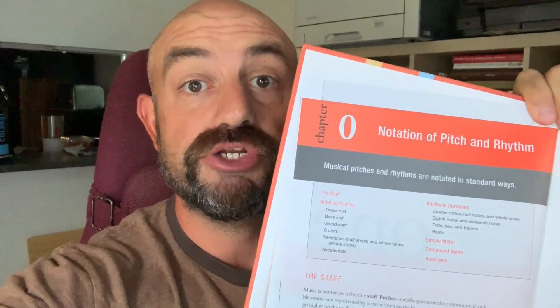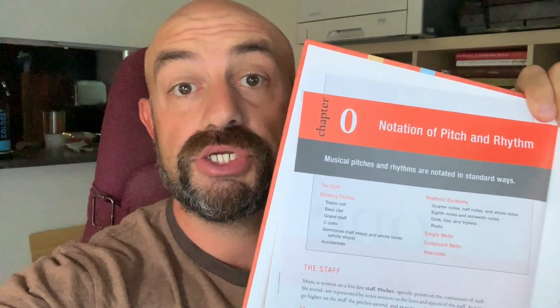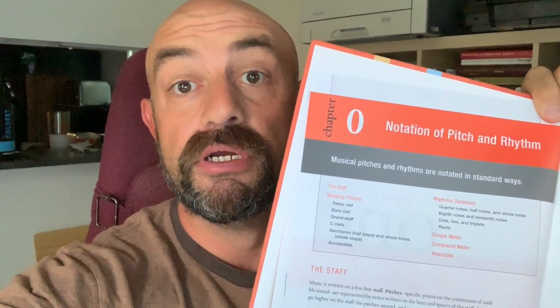Your assignment here for the weekend and going into Monday's class is to read Chapter 0, which introduces the ideas of pitch, the staff, and rhythm and meter. It gets things pretty simple for you. So this video is going to be pretty short. We're going to cover half of the first chapter just talking about the staff and pitch. So let's get into things here, and we'll get going.